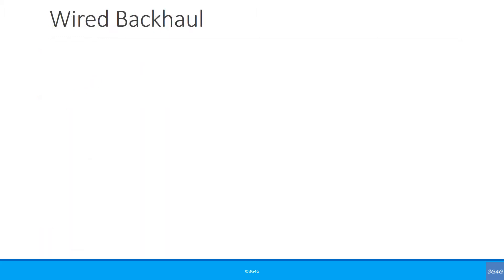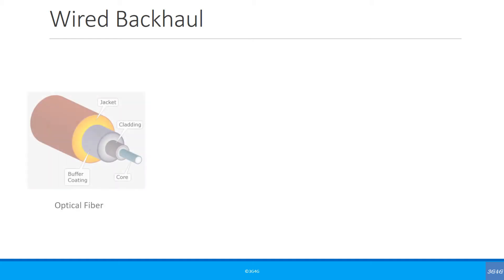Let's start with wired backhaul. The most popular wired backhaul is fibre, mainly in 4G, where there was a need for higher data rate support, so optical fibre was needed. 80% of all 4G sites and future 5G sites that will exist in dense urban areas will need optical fibre in either the first leg or somewhere in the backhaul chain.